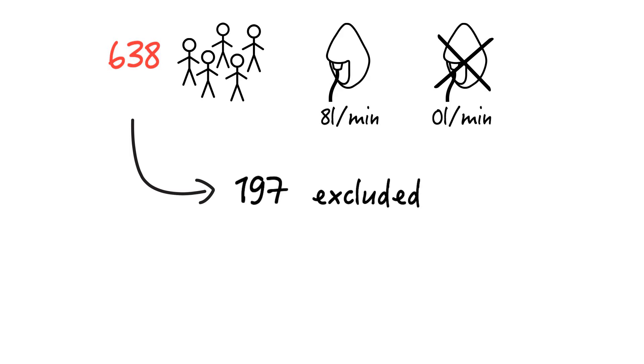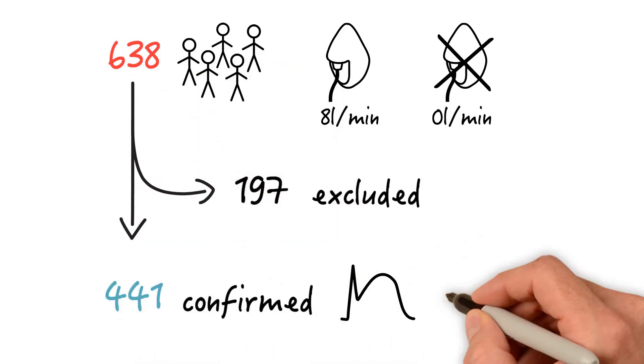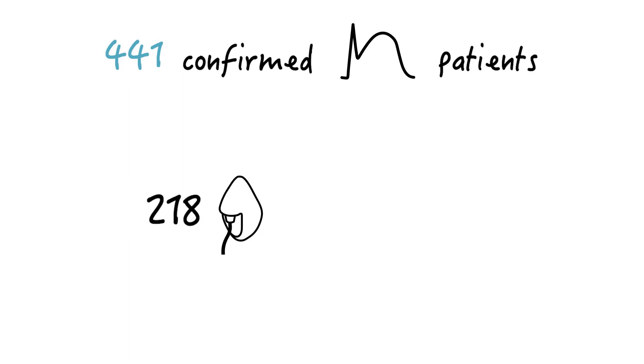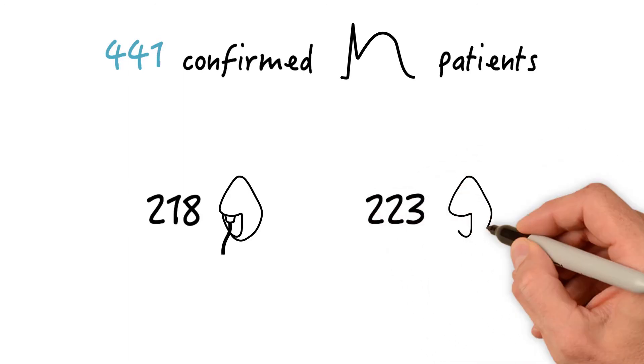So they ended up with a total of 441 STEMI patients who ultimately underwent coronary intervention. 218 of whom received supplemental oxygen and 223 did not.